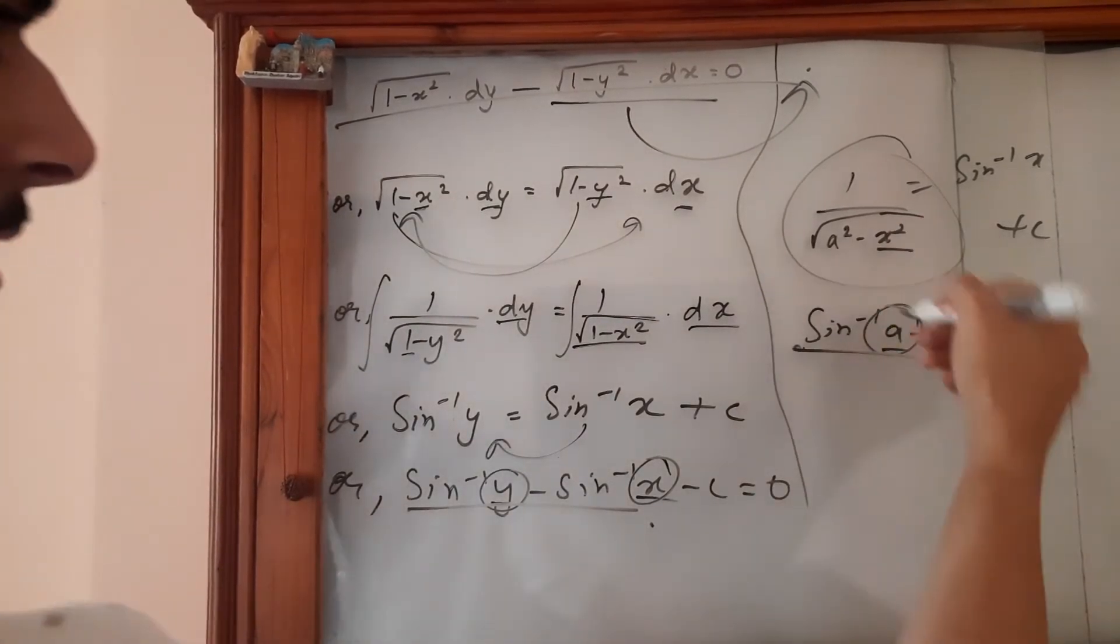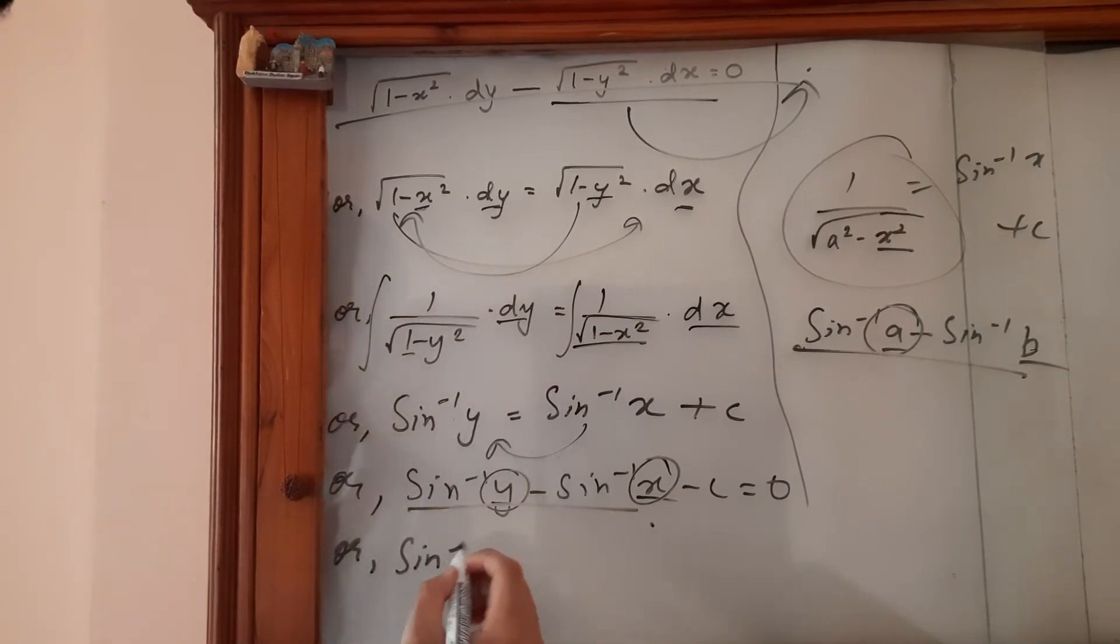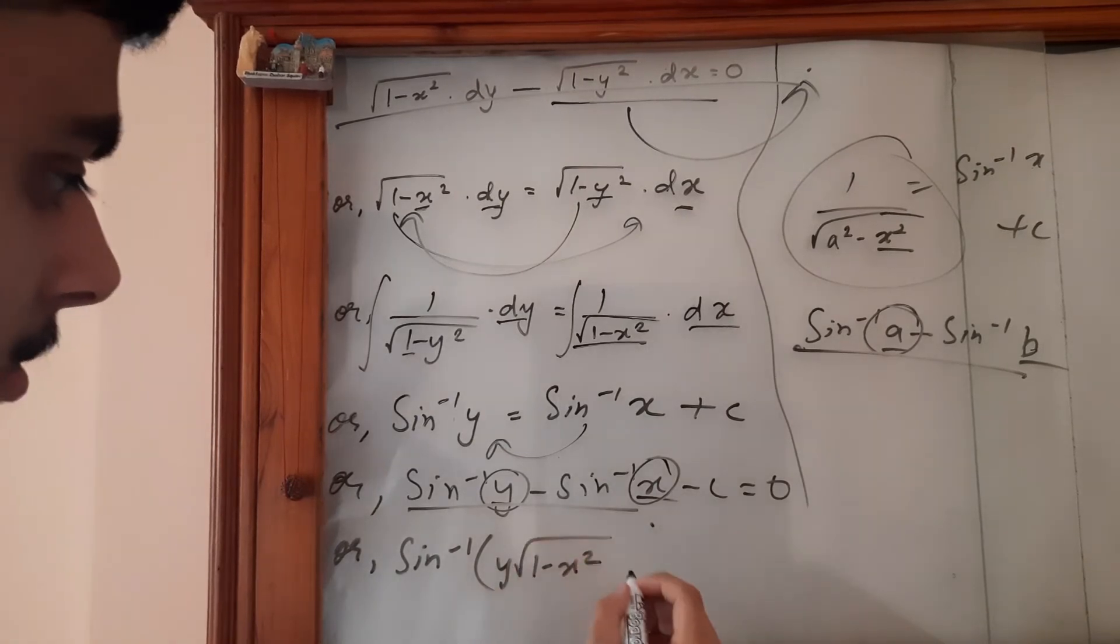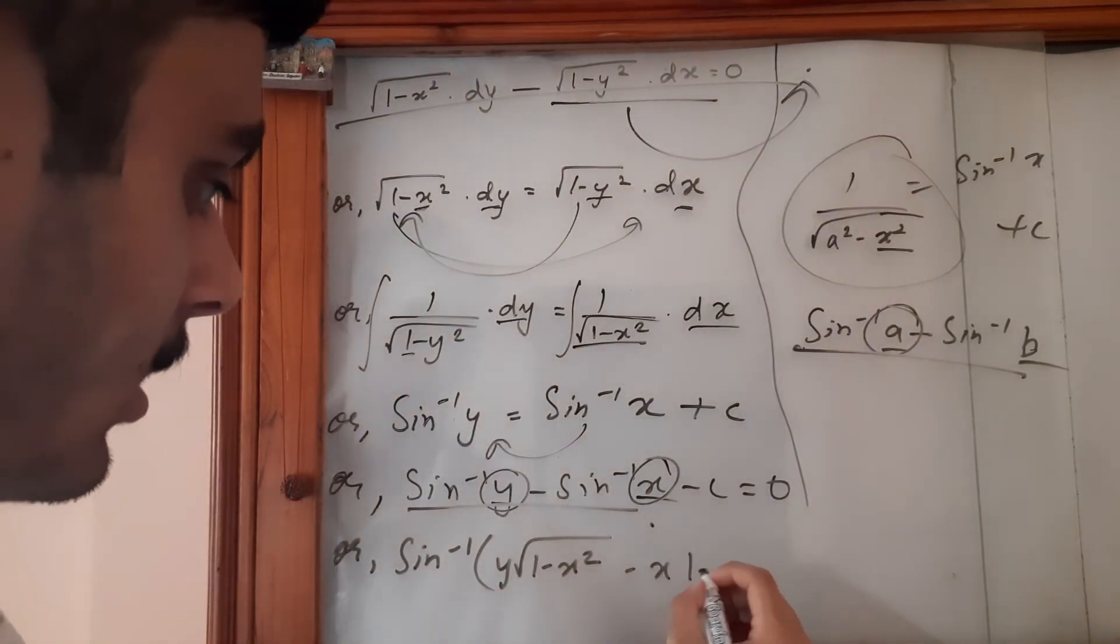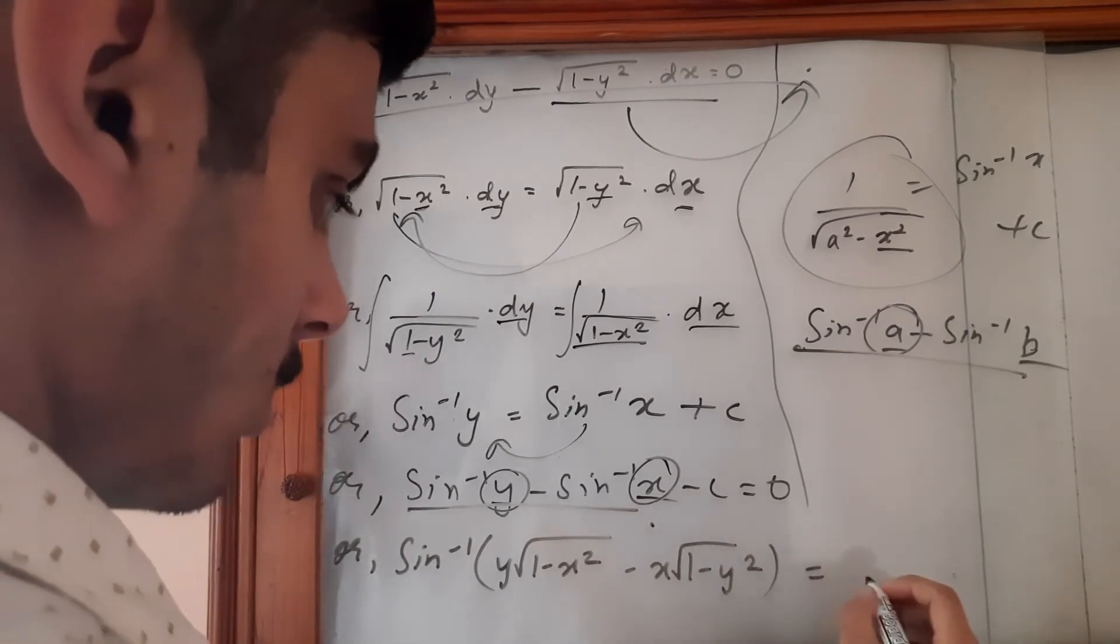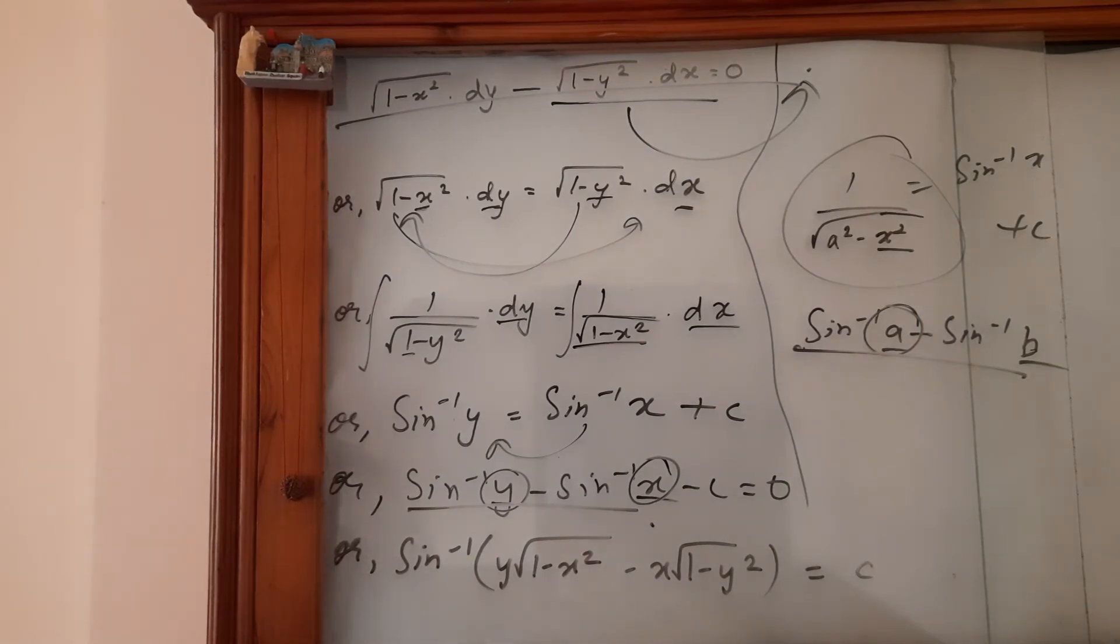And write is equal to sin c, and let's assume sin c is also one constant, let's say c prime. So yes, that way you can say that this is a final answer where c and c prime are different, where c prime is equal to sin c.